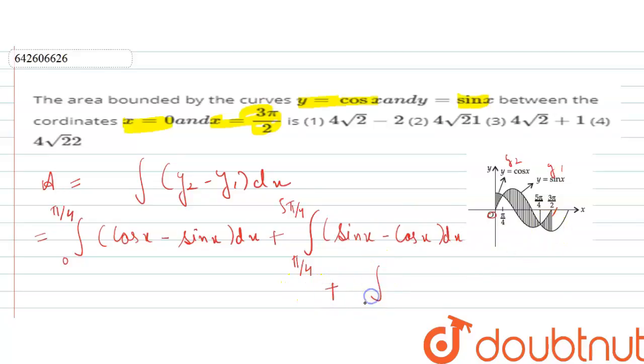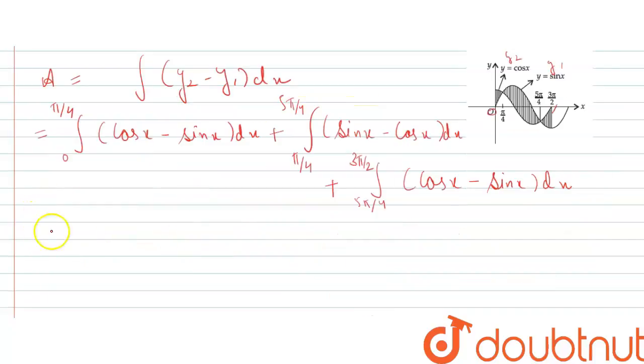Plus from 5π/4 to 3π/2, and here again cos x is leading, cos x minus sin x dx. Now we have to integrate these all three integrals.